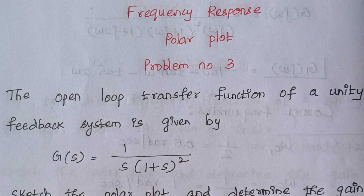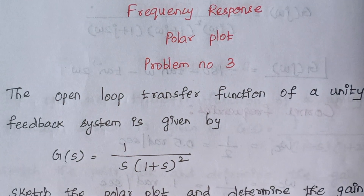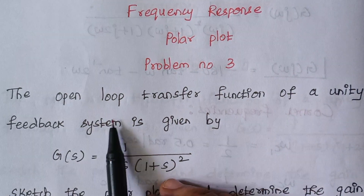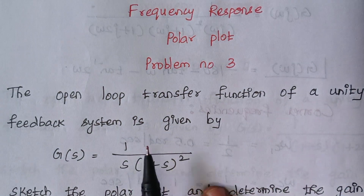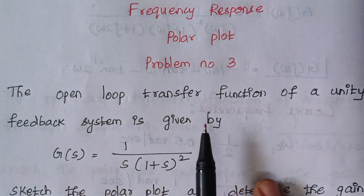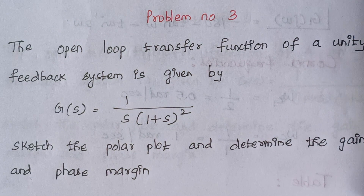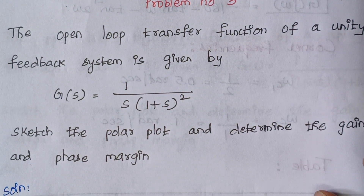Hello viewers, I am Kausalya. Today we are going to solve problem number 3 under the topic polar plot. The problem is: the open loop transfer function of a unity feedback system is given by this expression. Sketch the polar plot and determine the gain and phase margin.